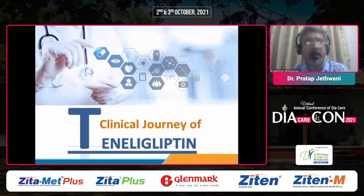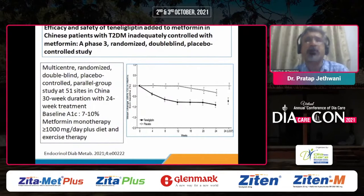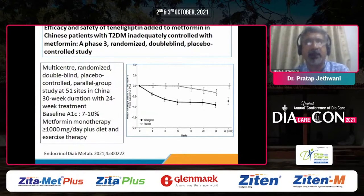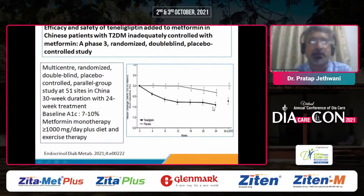The clinical experience with teneligliptin is wide — from our country, from Japan, from Korea, and now also from China. A study from China published in 2021 added teneligliptin to patients on metformin at least 1 gram per day plus diet and exercise, with baseline HbA1c of 7 to 10%, across 51 sites over a 24-week treatment period. HbA1c was reduced by 0.8 to 0.9% in this category of patients.